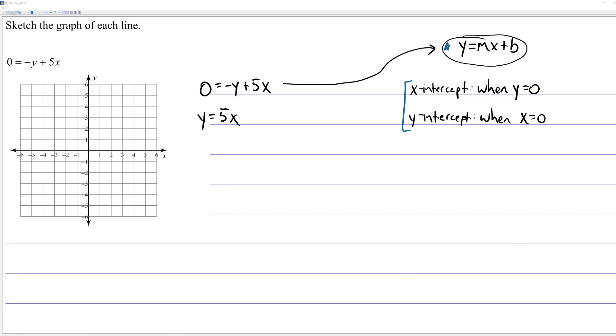So, this is slope-intercept form. Just realize 5, that's the number in front of x, that's the slope of the line. And then b, I can always imagine a plus 0. So, the y-intercept of the line is 0.